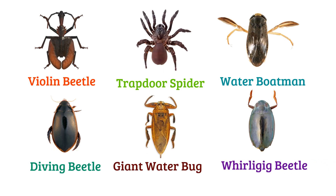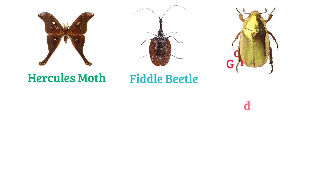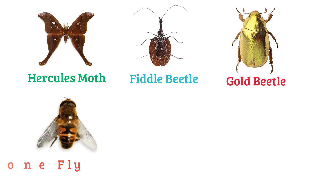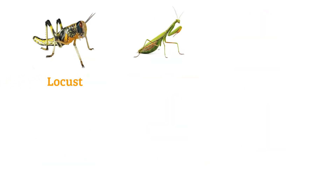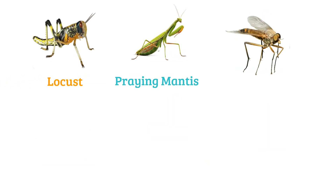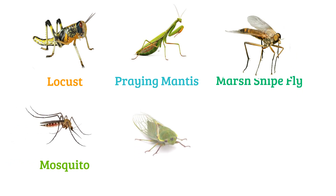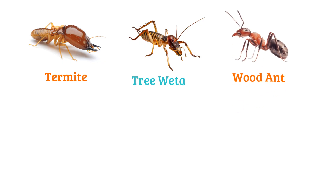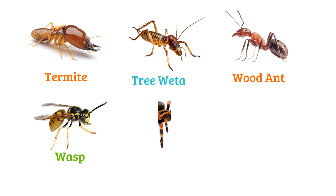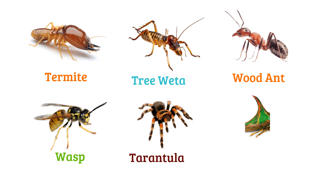Redback, whirligig beetle, Hercules moth, fiddle beetle, gold beetle, drone fly, great water beetle, flea, locust, praying mantis, mars knife fly, mosquito, leafhopper, marmalade hoverfly, termite, tree weta, wood ant, wasp, tarantula, thorn bug.